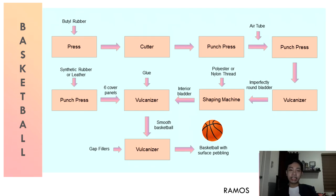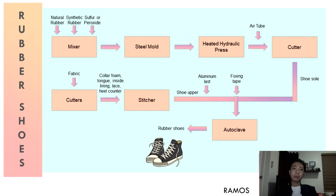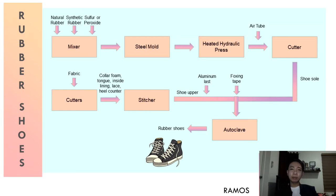Now we will briefly discuss the production of rubber shoes or sneakers. Rubber shoes consist of two parts: the upper part made of fabric, and the lower part or soles made of rubber. In making the soles, natural rubber, synthetic rubber, and curing agents such as sulfur or peroxide are mixed. This mixture is placed into a steel mold and sent into a heated hydraulic press. Afterwards, the excess rubber is cut to form a perfectly shaped sole.